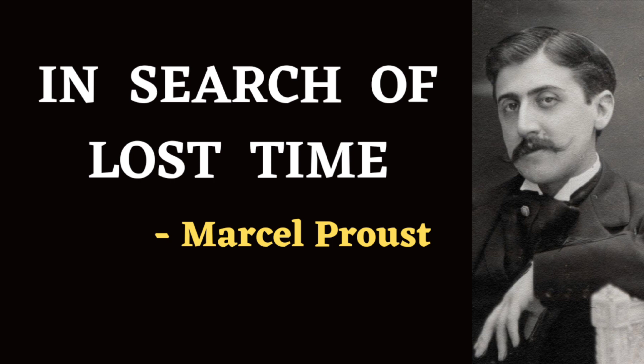In Volume 2, titled Within a Budding Grove, it continues the narrative journey of the narrator as he matures and navigates the complexities of love and desire. Set in the seaside town of Balbec, the novel explores the narrator's infatuation with the captivating Albertine Simonet and his interactions with other characters, including the enigmatic Baron de Charlus. Through vivid description of landscapes and nuanced character interactions, Marcel Proust delves into themes of longing, jealousy and the transient nature of human connections.